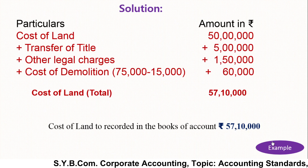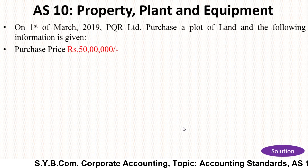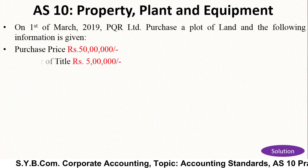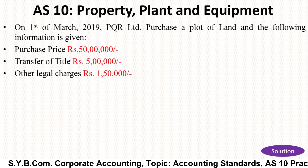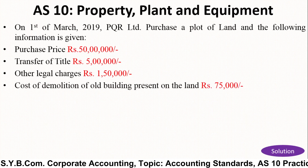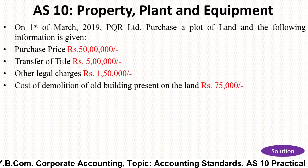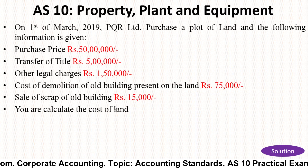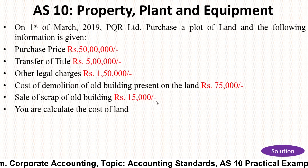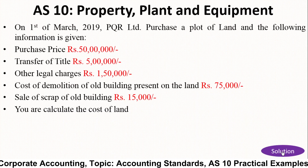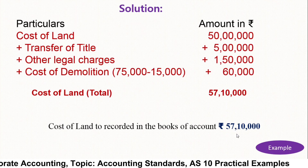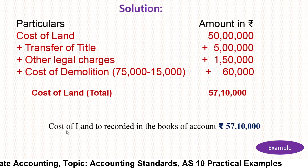Let us see the example once again. PQR Company purchased a plot of land for rupees 50 lakh as the purchase price, transfer of title rupees 5 lakh, other legal charges rupees 1,50,000, cost of demolition of the building located on the land rupees 75,000, and sale of scrap rupees 15,000 — that is your income. In this way you can calculate the cost of the asset, which is the cost of land.